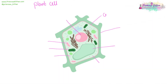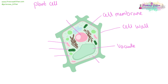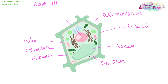Here we have our beautiful plant cell with a cell membrane, which is responsible for determining which bits go in and out of the cell. The cell wall is important for structure. The vacuole is important for structure. The cytoplasm is where most of the reactions take place. The tiny little dots are the ribosomes, which are responsible for protein synthesis. The green bits are the chloroplasts. The pink ones are the mitochondria, where energy is produced. And then last but not least, we have our nucleus.